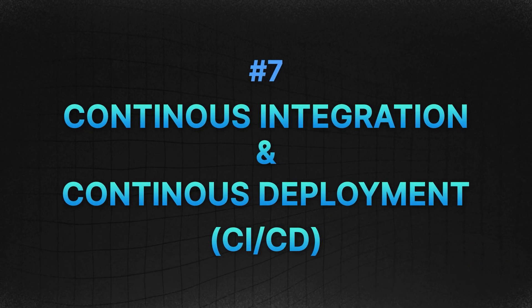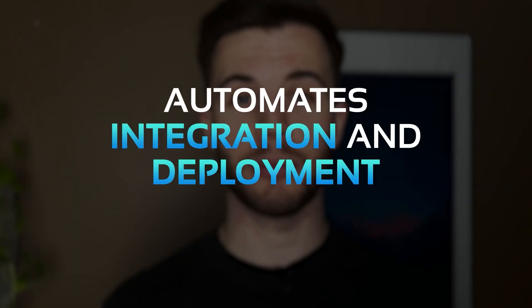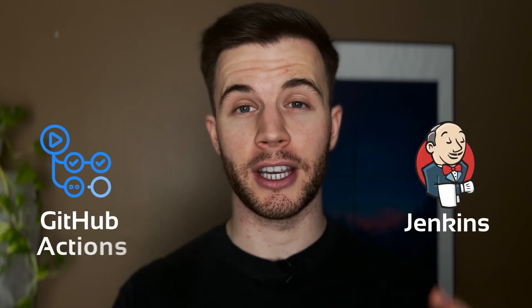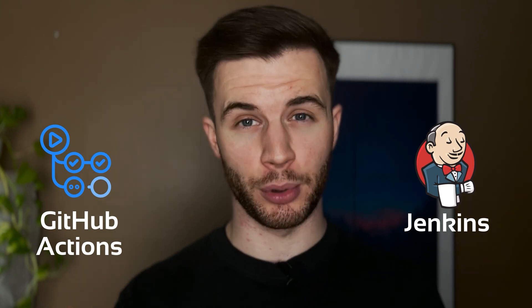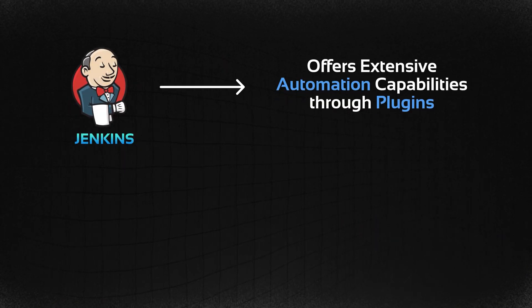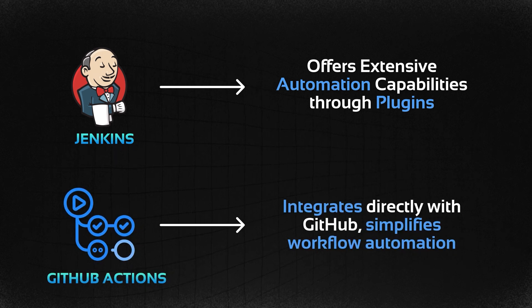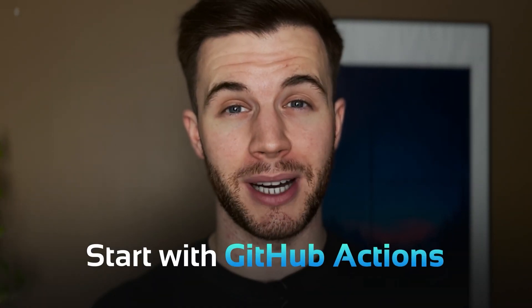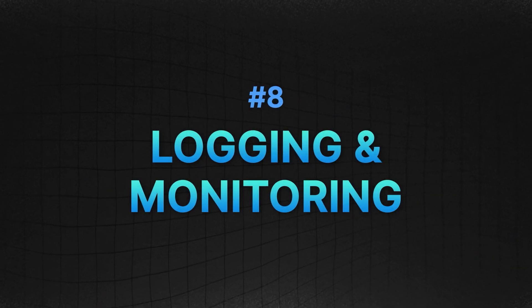Continuous integration and continuous deployment — CI/CD automates the integration and deployment of code, enabling faster and more consistent software updates, making it a critical and core responsibility for a DevOps engineer. Tools such as Jenkins or GitHub Actions are central to this process. Jenkins offers extensive automation capabilities through its plugins, while GitHub Actions integrates directly with GitHub, simplifying workflow automation within your repository. I'd suggest starting off with GitHub Actions — it's free and a great way to learn.